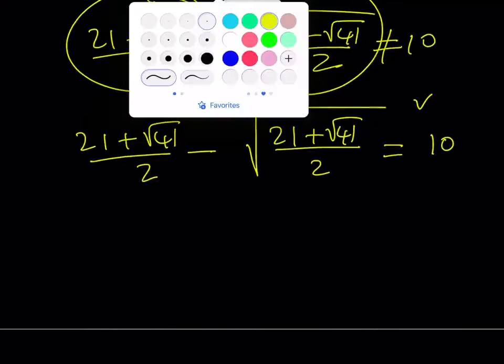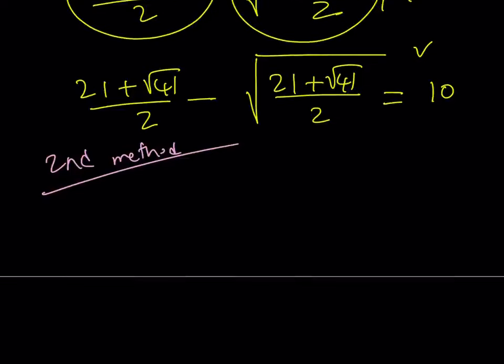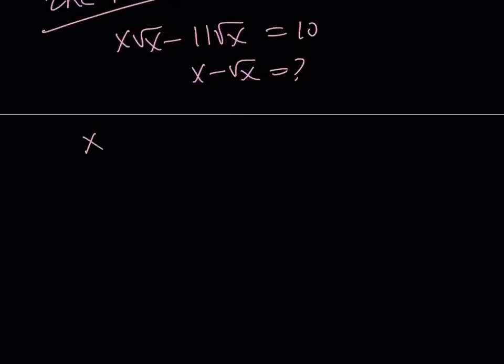Second method. The second method is really cool. I think you're going to love it. So, I have x√x - 11√x = 10. And I'm supposed to evaluate x - √x. Here's how I'm going to do it. I'm going to split up the 11 into x√x - 10√x. Why do I split it up? Because it's fun. And you'll see in a little bit.